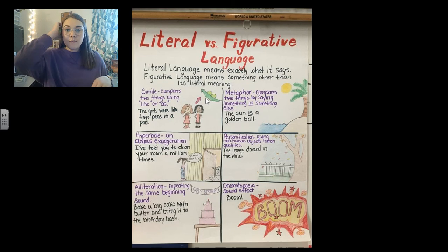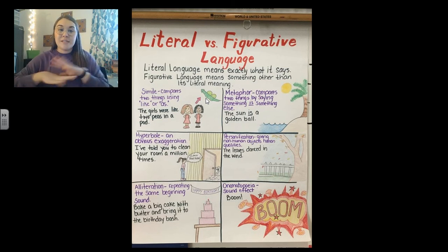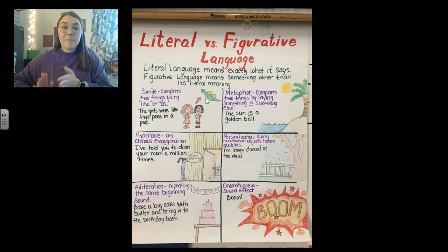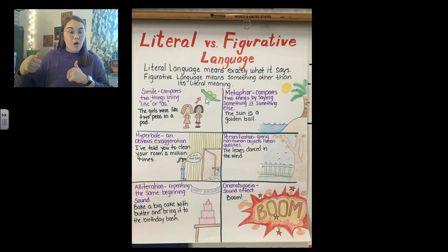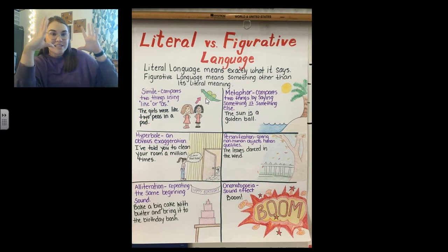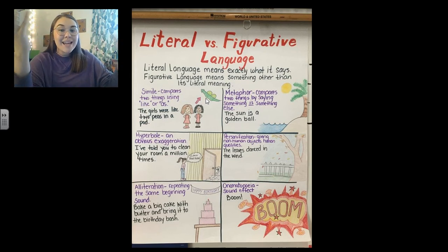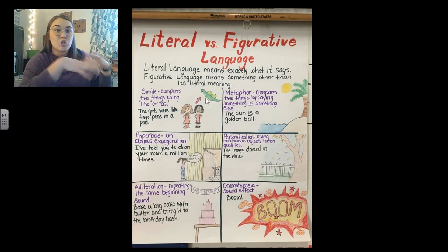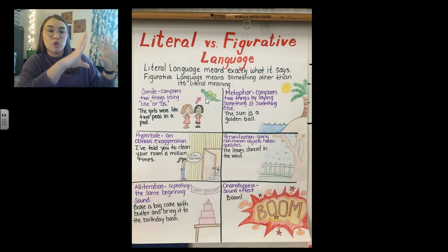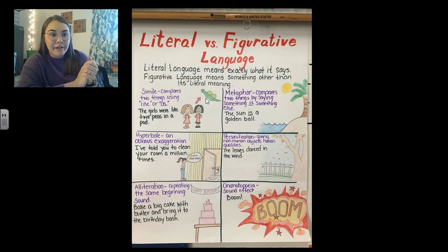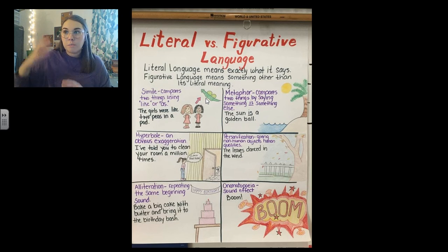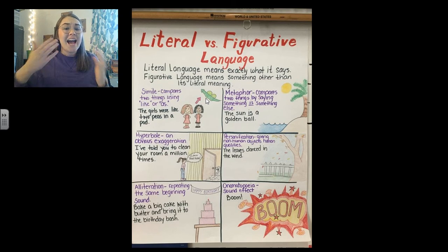Let's talk about metaphors. Metaphors are when you compare two things by saying something is something else — not using like or as. A simile uses like or as; a metaphor does not. So, the sun is a golden ball. It is not saying the sun is an actual golden ball in the sky. It is saying the sun is super yellow and round and big in the sky — it's comparing it, trying to give you a mental picture of what the sun looks like. Because if I said the sun looks like a basketball, you would picture something orange, not a golden ball.